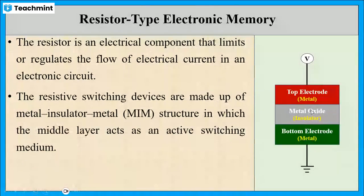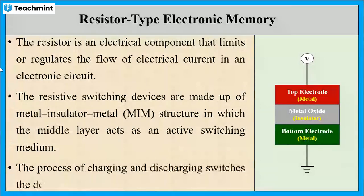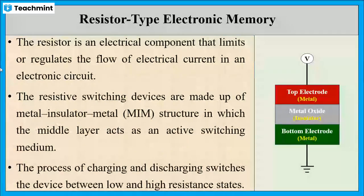That is metal insulator metal structure. Here, the metal oxide layer acts as an active switching medium. In this device, charging and discharging result in two stable resistance states, that is low resistance state and high resistance state. This property of resistive switching devices is used in resistor type electronic memory.